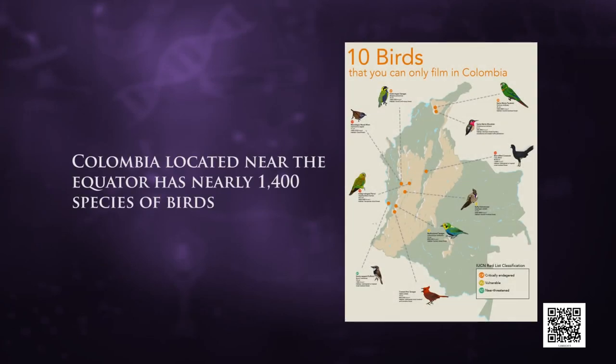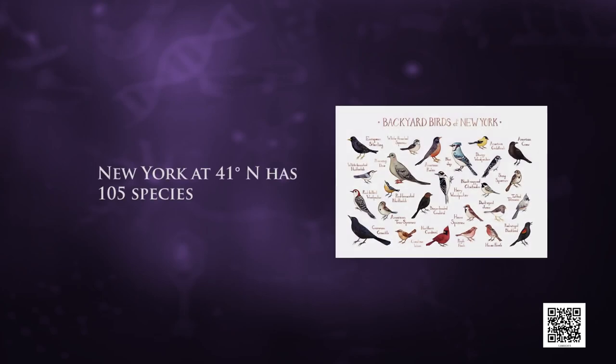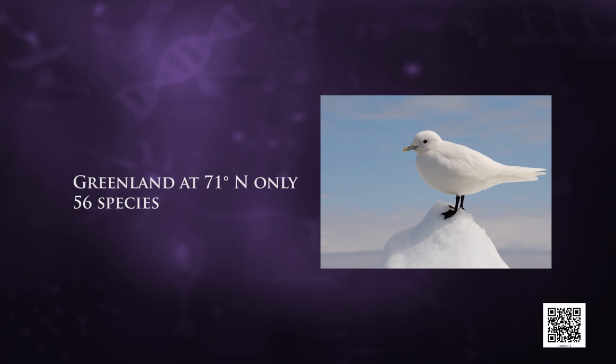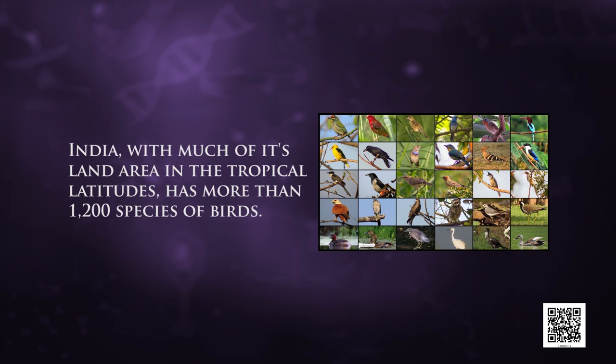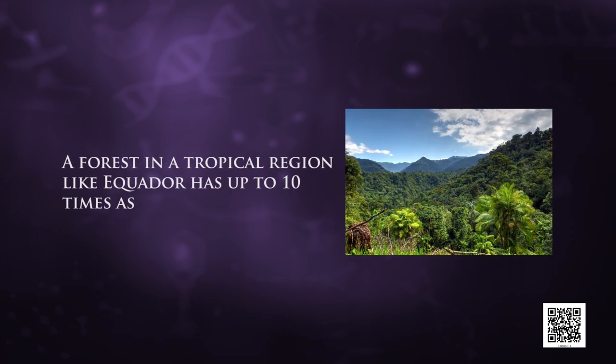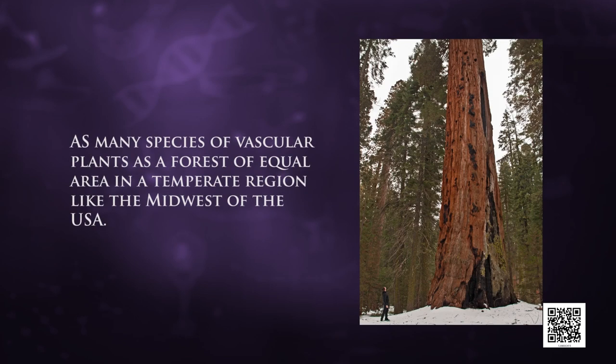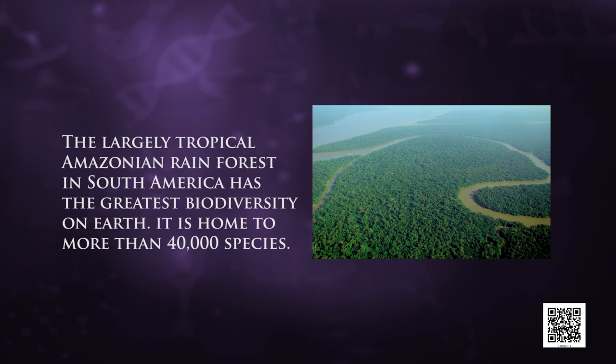The tropics, latitudinal range 23.5 degrees north to 23.5 degrees south, harbor more species than temperate or polar areas. Colombia, located near the equator, has nearly 1400 species of birds, while New York at 41 degrees north has 105 species and Greenland at 71 degrees north only 56 species. India, with much of its land area in tropical latitudes, has more than 1200 species of birds. A forest in a tropical region like Ecuador has up to ten times as many species of vascular plants as a forest of equal area in a temperate region like the Midwest of the USA.